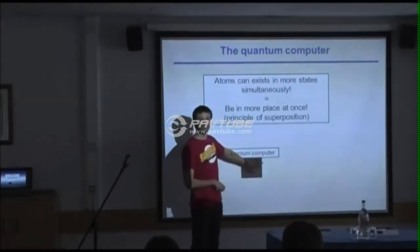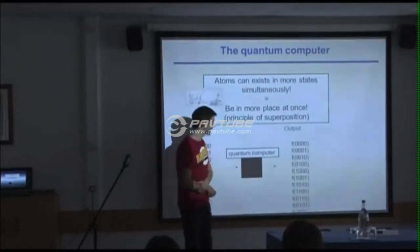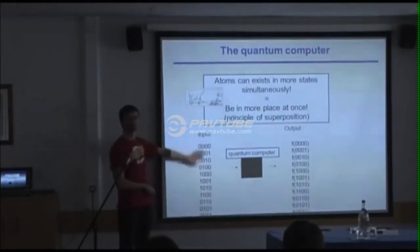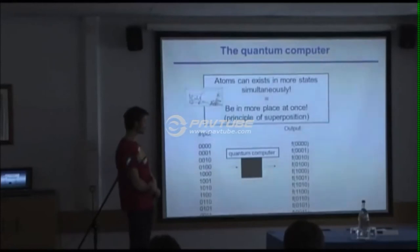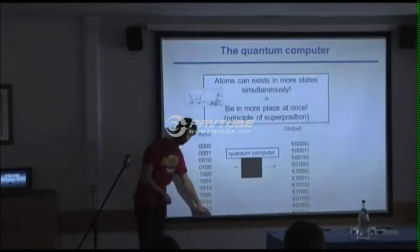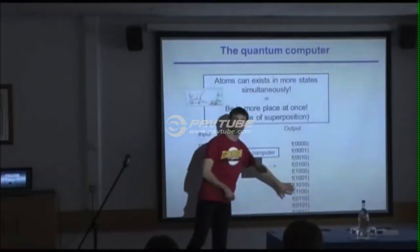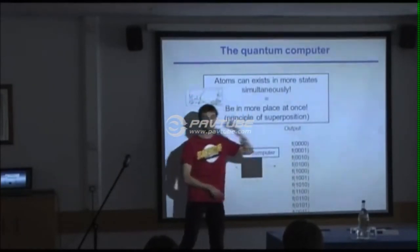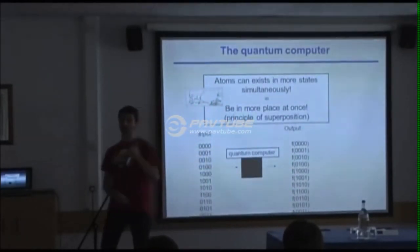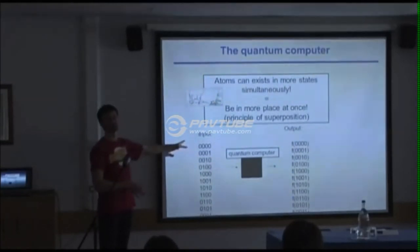For you and for me, maybe right now the quantum computer can just be a black box, but the input are these qubits. If we have four, then we have sixteen different states that we can represent at the same time, and the black box calculates for us sixteen different outputs. If we had 300 of those, we would be calculating more values in a single step than the atoms in the whole universe. That's the power of the quantum computer.